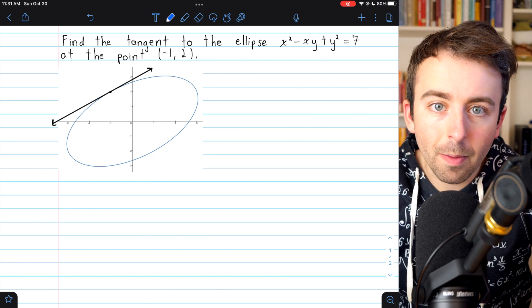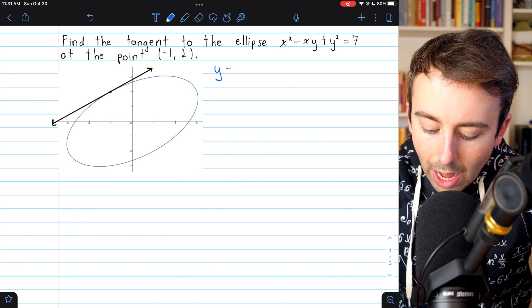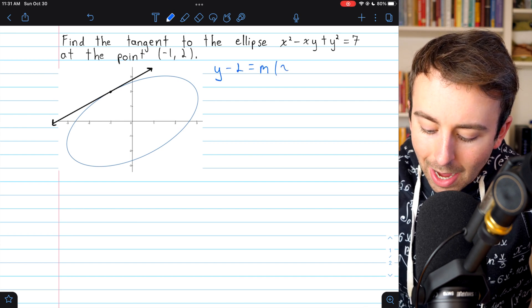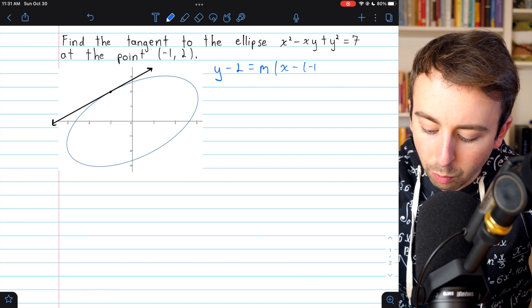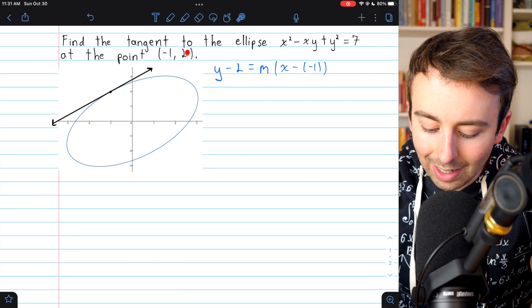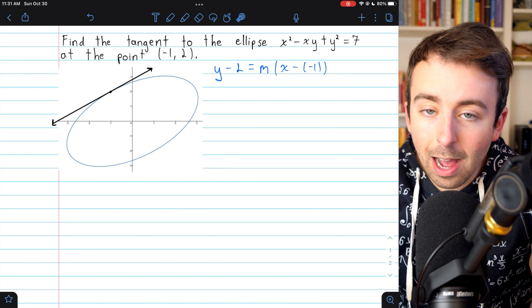So we already know from the jump that our tangent line is going to look like this: y - 2 = m(x - (-1)). This is just point-slope form for a line using this point. All right, so then all that really remains is for us to find m, the slope at this point.